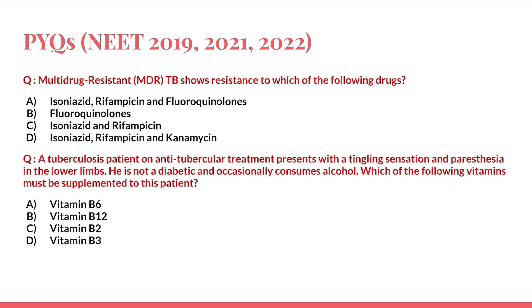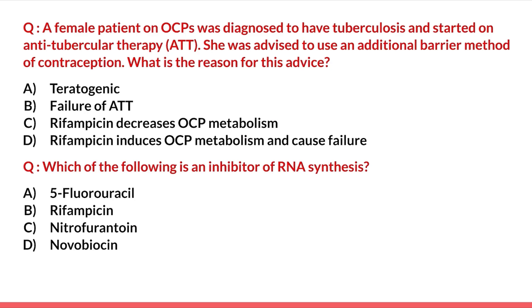The PYK questions that have come almost every year are: first, 'Multi-drug resistant TB (MDR-TB) shows resistance to which drugs?'; second, 'A tuberculosis patient on anti-tubercular treatment presents with tingling sensation and paresthesia in the lower limbs — not diabetic, occasionally consumes alcohol — which vitamin must be supplemented?'; third, 'A female patient on OCPs diagnosed with TB was advised an additional barrier contraceptive method — why?'; and fourth, 'Which of the following is an inhibitor of RNA synthesis?'